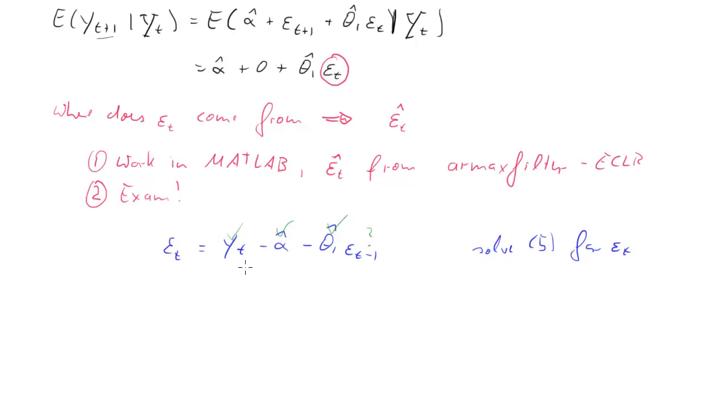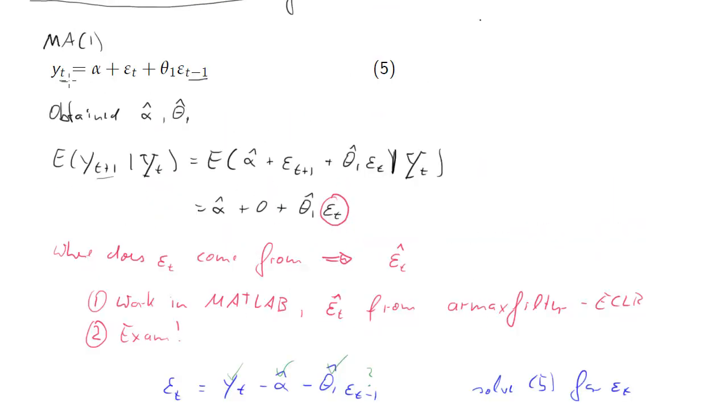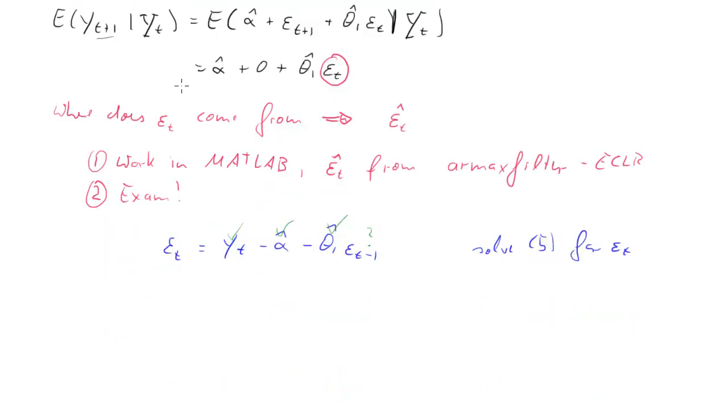Now let's do exactly the same again. Let's say, all right, we'll state equation 5 just for t minus 1, and then we solve for epsilon_t-1. Okay, so we could say state equation 5 for t minus 1 and solve for epsilon_t-1.